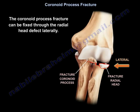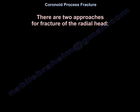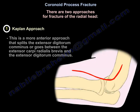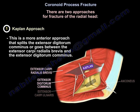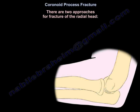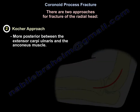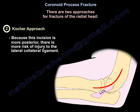The coronoid fracture can be fixed through the radial head defect laterally. There are two approaches for fracture of the radial head. The Kaplan approach is a more anterior approach that splits the extensor digitorum communis or goes between the extensor carpi radialis brevis and the extensor digitorum communis. This anterior approach will decrease the risk of damage to the lateral ulnar collateral ligament but will increase the incidence of injury to the posterior interosseous nerve. The Kocher approach is more posterior, between the extensor carpi ulnaris and anconeus muscle, and because that incision is more posterior, there is more risk of injury to the lateral collateral ligament.